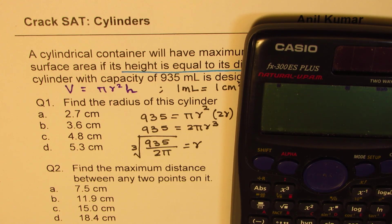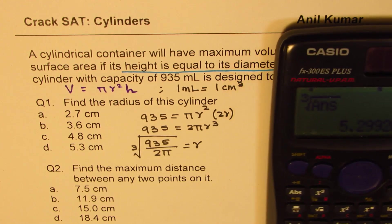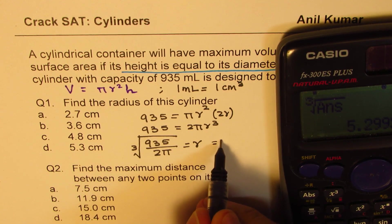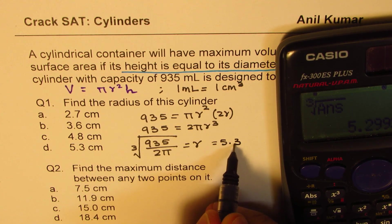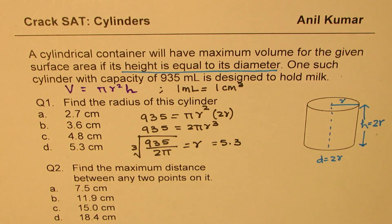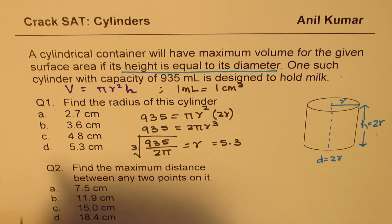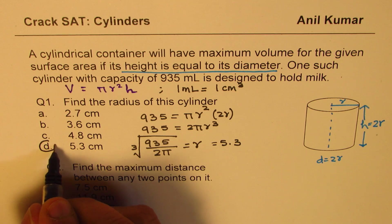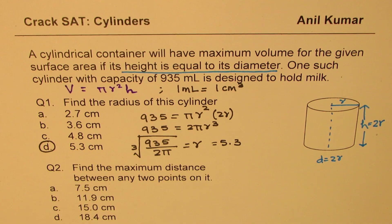So that gives us 5.29. That is 5.29 could be written as 5.3. So we get the radius of 5.3, which is option D for us. Perfect. So we get the first answer.